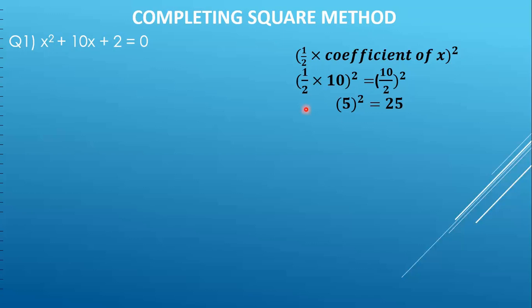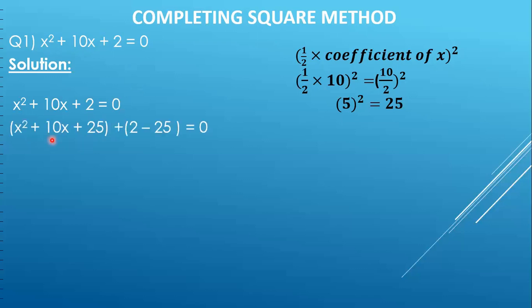Now the next important thing is where to add 25 and where to subtract 25. In this method your equation is divided into two parts: variables and constants. Variables have letters in them and constants are only numbers. The variable part gets the positive number and the constants get the negative number. So we have x squared plus 10x plus 25 plus 2 minus 25.